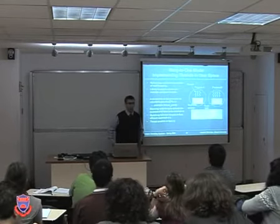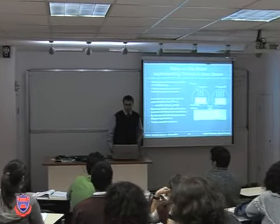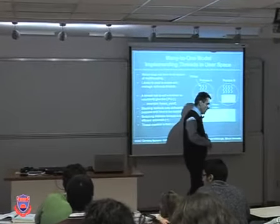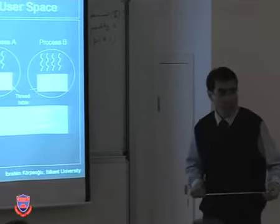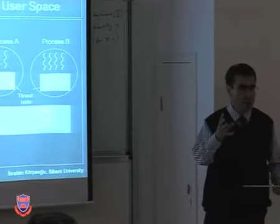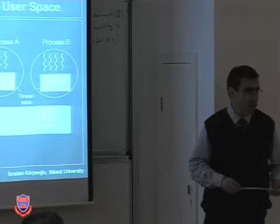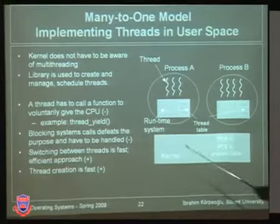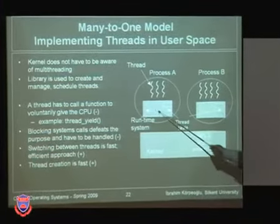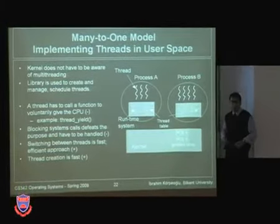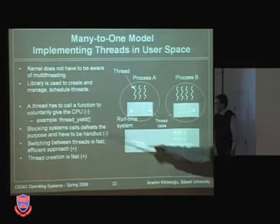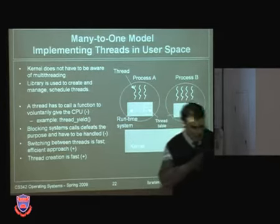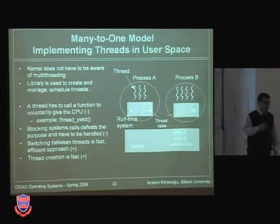We will continue our discussion about how we can implement a thread library in user space — implementing the many-to-one model, since the kernel supports just one thread per application. We have seen the difficulties: the kernel is not aware of threading, including blocking system calls and threads needing to explicitly yield the CPU.